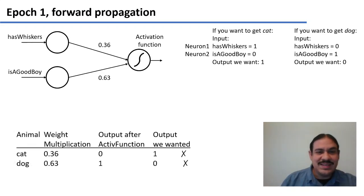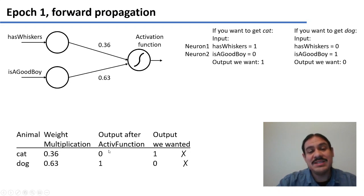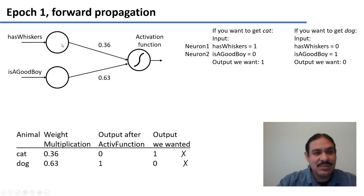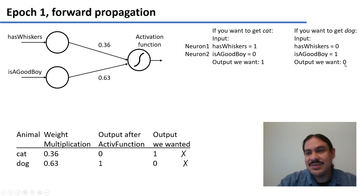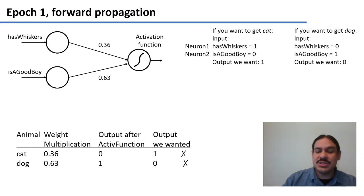As you can see, this is not the output we want — both of them failed. When we have cat, the value into the output layer is 0.36, and through the activation function it becomes 0, but we wanted a 1 for cat. Likewise for dog, the value is 0.63, and through the activation function we get 1, but we wanted a 0. So neither worked. We're going to calculate the error, calculate the deltas, and then back-propagate to readjust the weights.